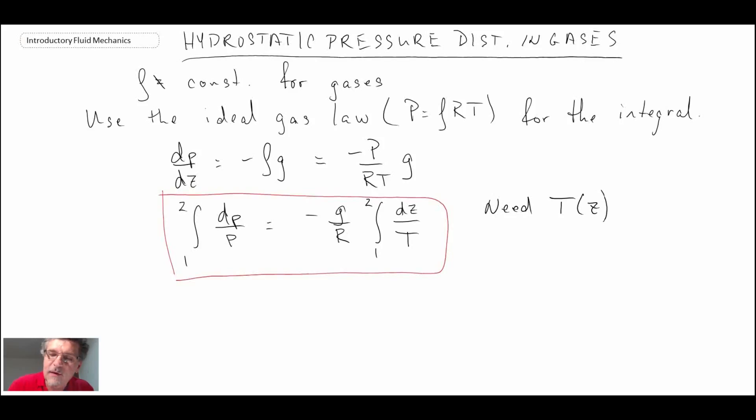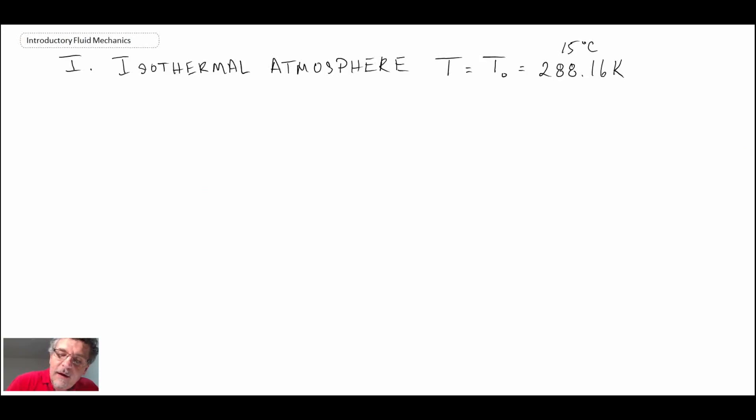We are going to look at a couple of cases here. The first one will be the assumption of an isothermal atmosphere. We will assume temperature is T₀ = 288.16 Kelvin. Looking back at our integral equation, when you put that temperature in, that's just going to be a constant. So it's a relatively straightforward integral.